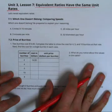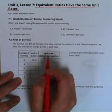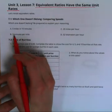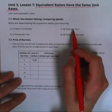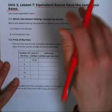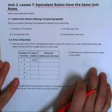For activity 1 they want to know which one doesn't belong and why. You have 5 miles in 15 minutes, 3 minutes per mile, 20 miles per hour, and 32 kilometers per hour. There are very good reasons as to why all of these wouldn't belong.